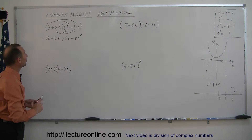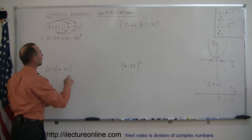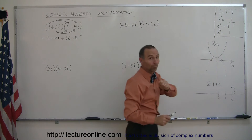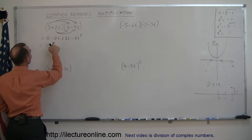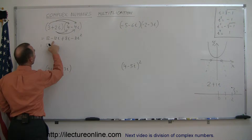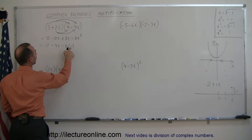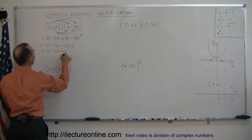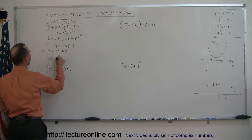Next, you're going to combine the two middle terms, and then you look at the i squared term. Remember that i squared is equal to negative one, so we replace i squared by negative one, and we write this as 12. Combining the middle terms, negative twelve i plus eight i is negative four i, and negative eight times negative one is plus eight. So this is equal to twelve minus four i plus eight, and combining twelve and eight gives us twenty minus four i.